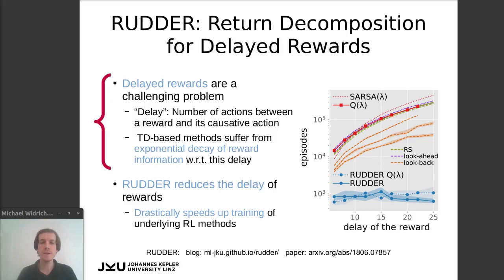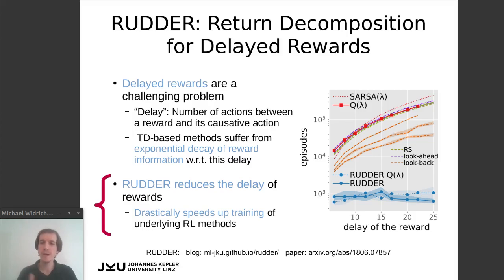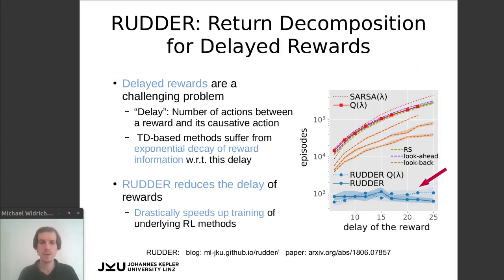In 2018, a method called RUDDER was proposed to get rid of such delays, or at least to reduce them. This leads to a drastic speedup for underlying reinforcement learning methods, as you can see in this figure. SARSA and Q-learning require exponentially more episodes as the delay gets higher. RUDDER, on the other hand, scales nicely to larger delays.